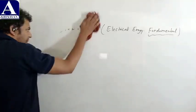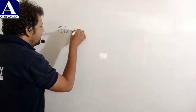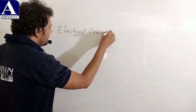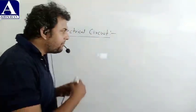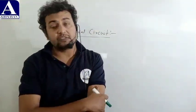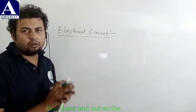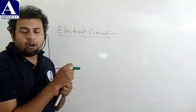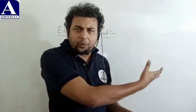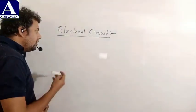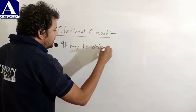First unit का पहला topic है: Introduction to Electrical Circuit। Electrical circuit की definition की बात करें, तो हम लोग अपनी language में लिखेंगे। Electrical circuit जो होगा, वो electrical components का एक ऐसा interconnection होगा जिससे एक closed path बनेगा, और उस closed path में current flow होगा, और current के flow होने से circuit कुछ response देगा। So electrical circuit it may be defined as an interconnection of electrical components in such a way that a current flows in a closed path, and due to this, circuit gives a response.